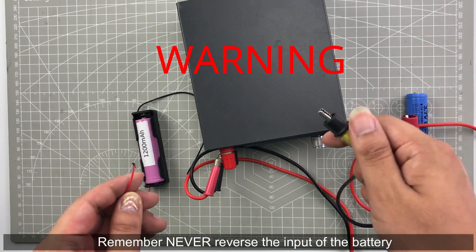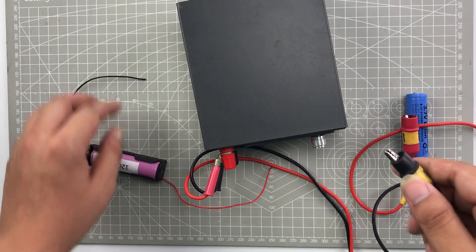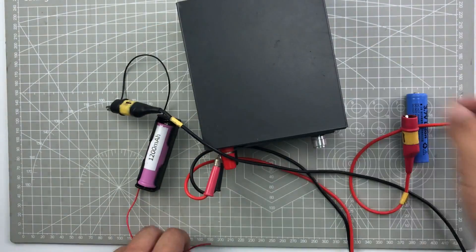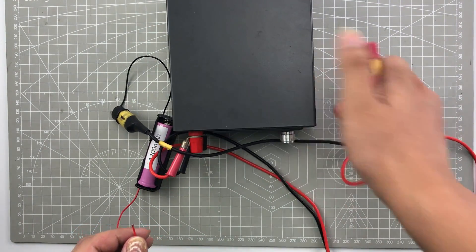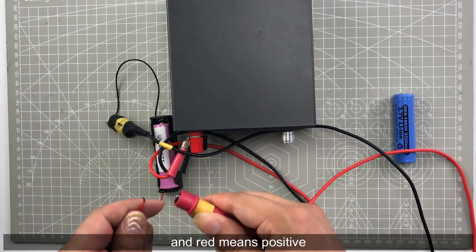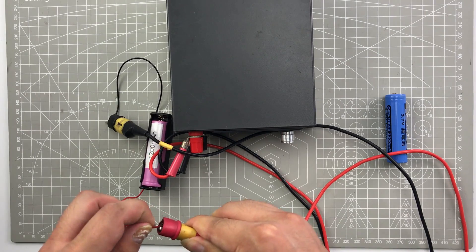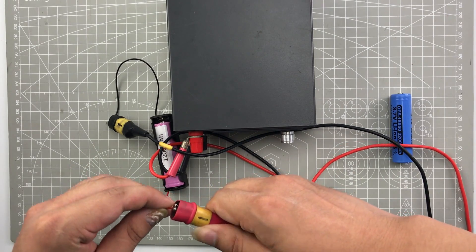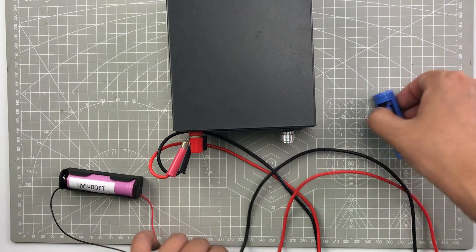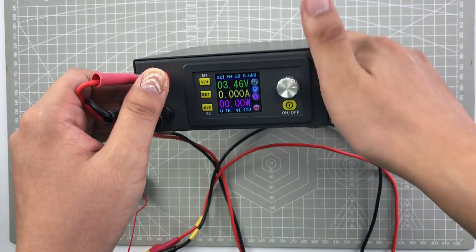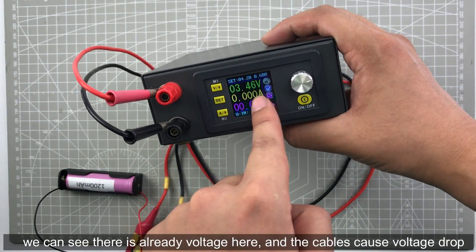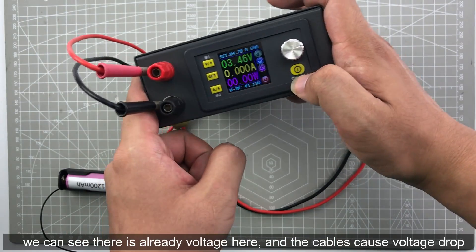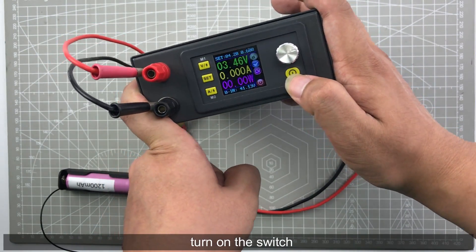We need to set the right voltage and the right current. Remember, never reverse the polarity of the battery. Black means negative, and red means positive. We can see there is already voltage here because the cable has voltage drop.